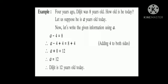Let us see another example. Four years ago, Diljit was 8 years old. How old is he today? So, we have been told to find out Diljit's age today. Let us suppose he is a years old today. We have considered the variable a over here. Now, let us write the given information using a. a minus 4 is equal to 8.